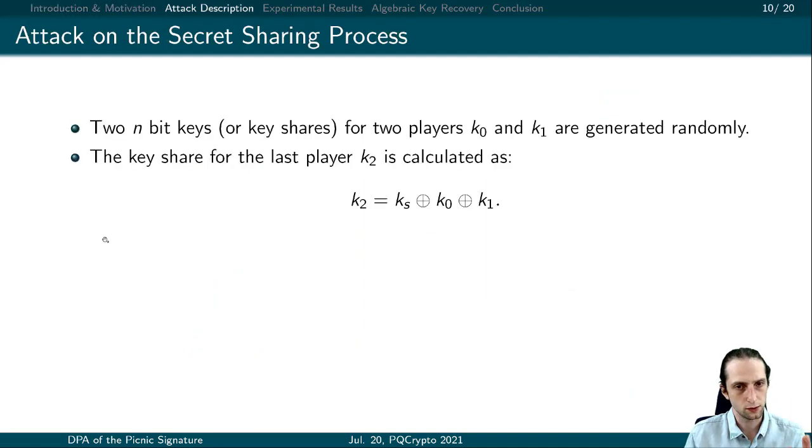Let us focus on the first attack. This attack uses the calculations of the secret sharing process or the share function. The implementation of this operation is done by randomly sampling the key shares of the first two players. Using these values, the key share of the third player is calculated as in this equation. The critical thing is, during the challenge and opening phase of the Picnic scheme, the key shares of two of the three players are revealed and become part of the signature.